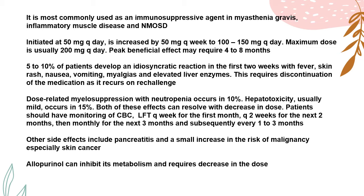What are the neurological indications and side effects of azathioprine (Imuran)? It is most commonly used as an immunosuppressive agent in myasthenia gravis, inflammatory muscle disease, and NMOSD. It is initiated at 50 milligrams per day, increased by 50 milligrams per week to 100 to 150 milligrams per day given in two divided doses. Maximum dose is usually 200 milligrams per day. Peak beneficial effect may require four to eight months.